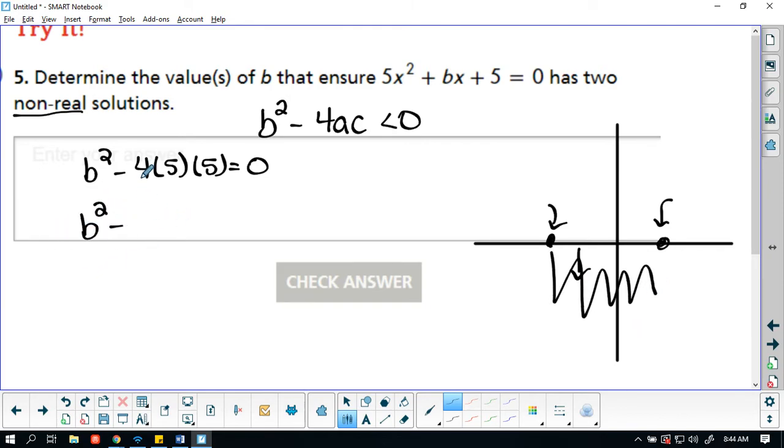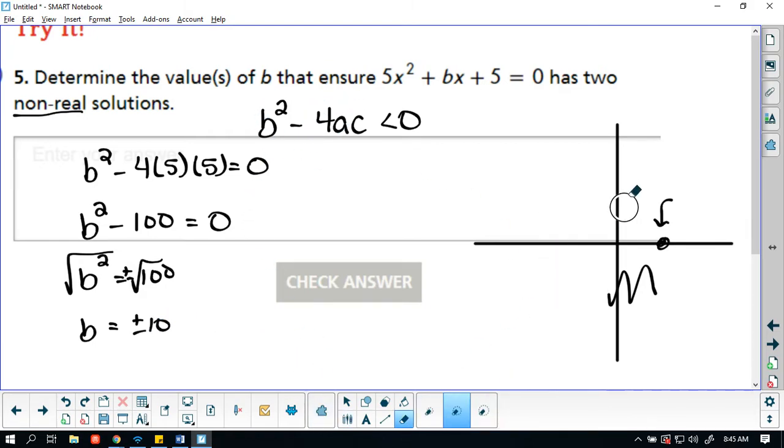So I get b squared minus 100 equals zero. And b squared equals 100. I'm adding 100 to both sides. Take the square root. So in my discriminant here, I found that we hit the b axis at negative 10 and 10.